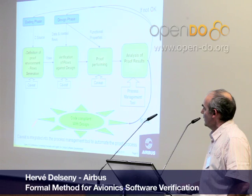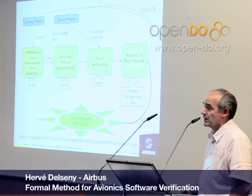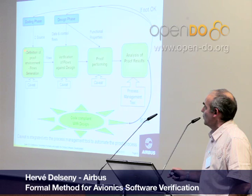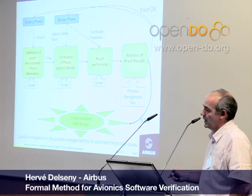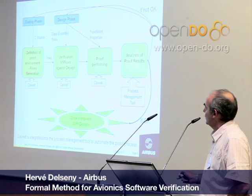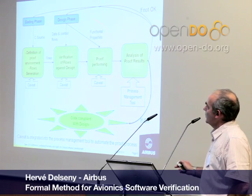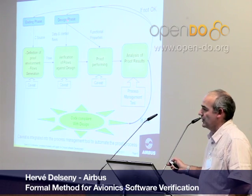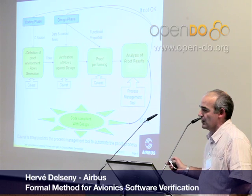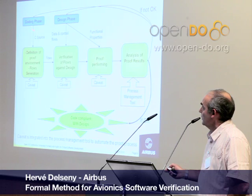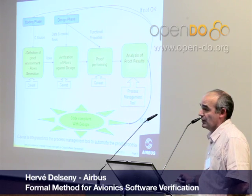This tool, Caveat, is integrated in our process management tools to automate the proof process. The first time, there is a lot of work to define the proof environment and to make the first proof of the application — it's not totally easy. But after that, for maintenance purpose, for example when you have to modify your property because of a high-level requirement modification, you modify your property, you modify your code, and after that Caveat is working for you.